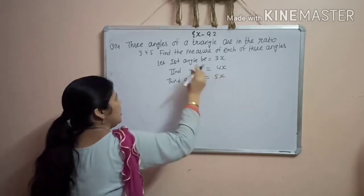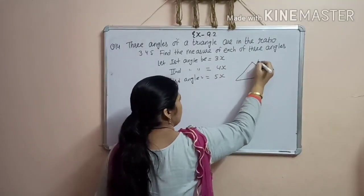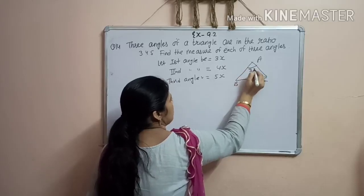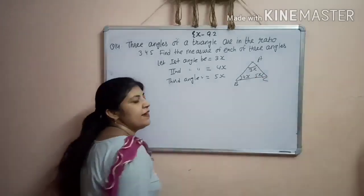Even you can take angle A, angle B and angle C. In that case you need to draw the figure: A, B, C. Angle A 3x, angle B 4x and angle C 5x.